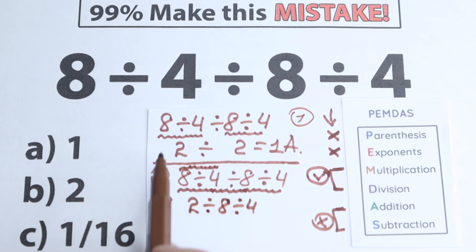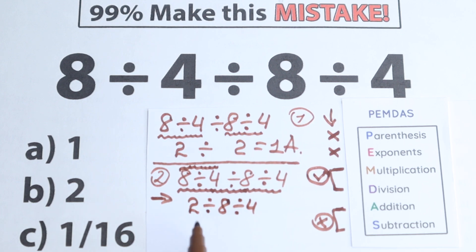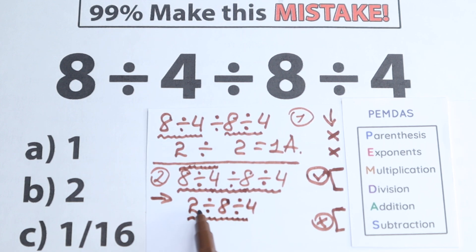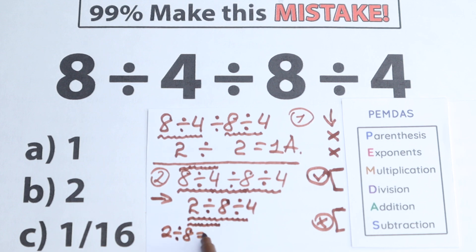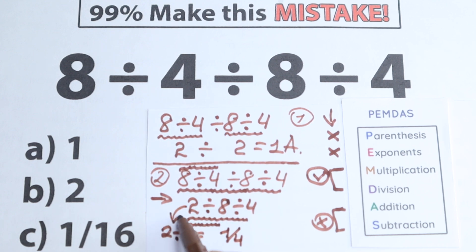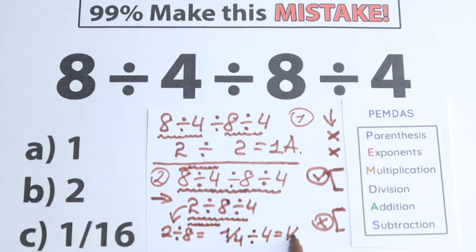The first step gave us 2. Now the first sign from the left in the new expression is the division between 2 and 8. So next we compute 2 divided by 8, which equals one-fourth. Then the last step: one-fourth divided by 4 equals one over 16. That is Option C.